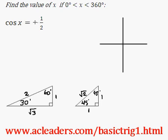First, let's ignore the negative sign and just take a look at this special triangle. We want cos to be half.